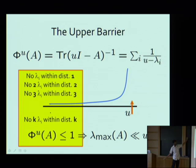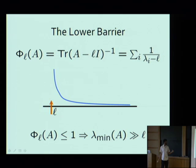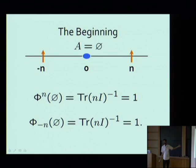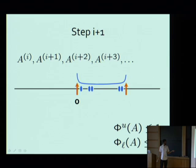If I know that the upper potential is bounded by 1, I know there's no eigenvalue within distance 1, no two eigenvalues within distance 2, no three within distance 3, etc. — the whole distribution is well-behaved with respect to this barrier. Similarly, the lower potential phi^L(A) = trace((A - lI)^{-1}) keeps track of distances from l. I can prove a lemma: if my potentials are bounded by 1, I can always choose some multiple of some vector to add so that both potentials do not increase when I shift the barriers by a third and two.